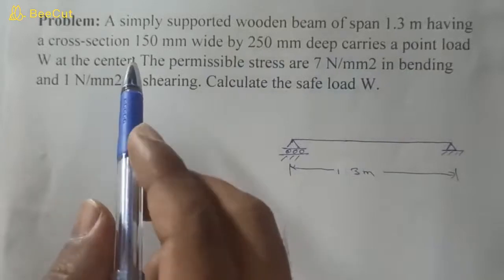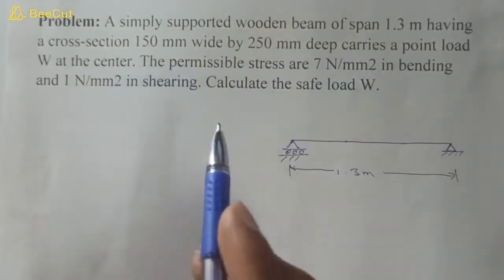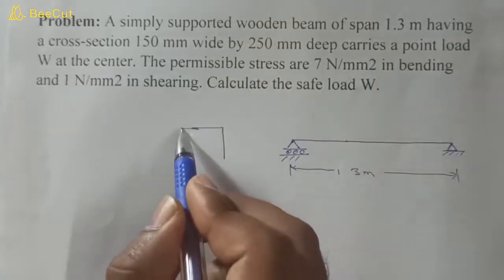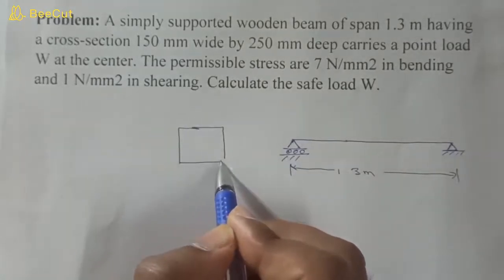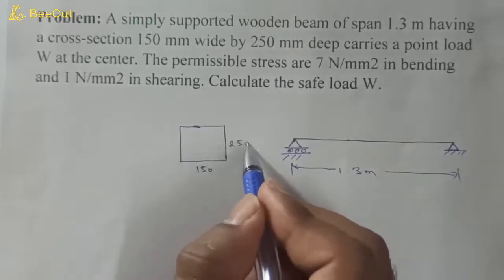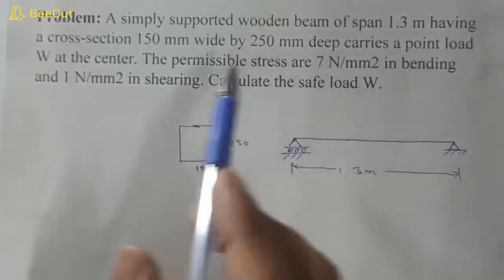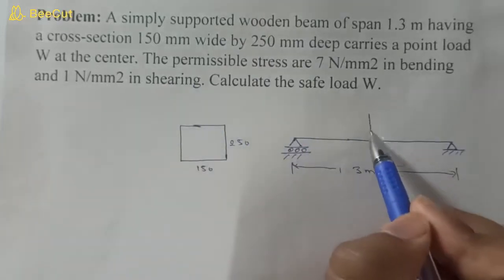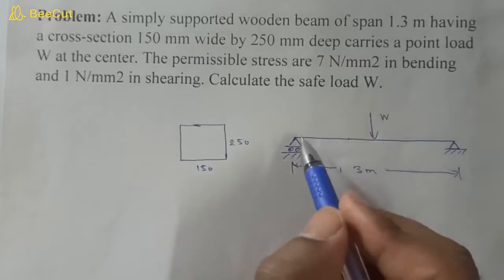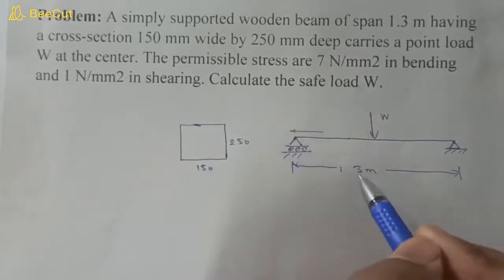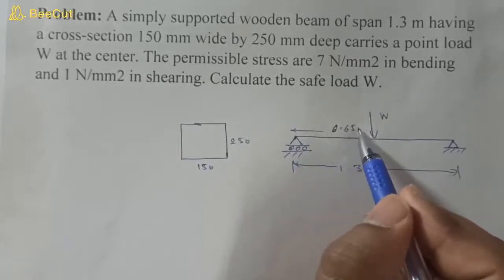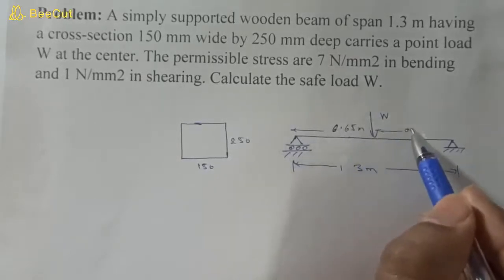The beam has a cross section of 150 mm wide and 250 mm deep, so this is a rectangular cross section: 150 mm by 250 mm. It carries a point load W at the center, so the center is at 1.3 divided by 2, which equals 0.65 meters from each end.